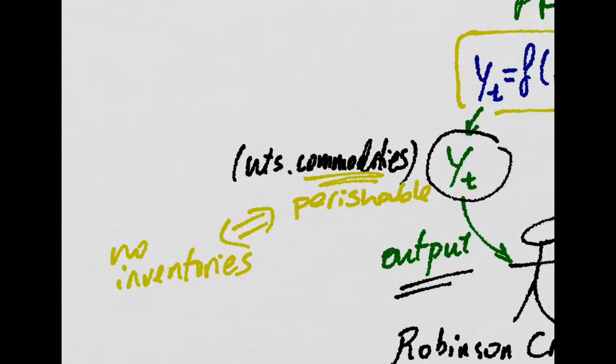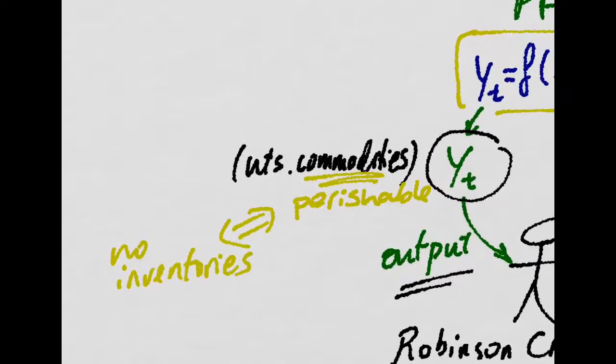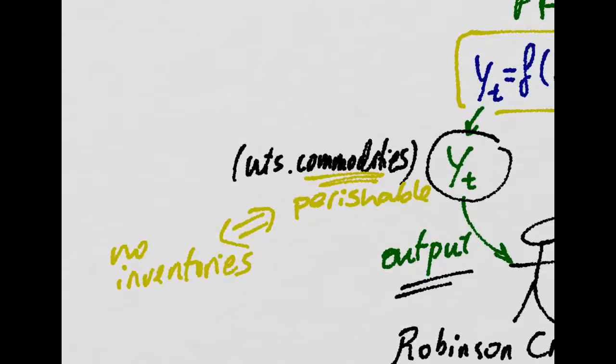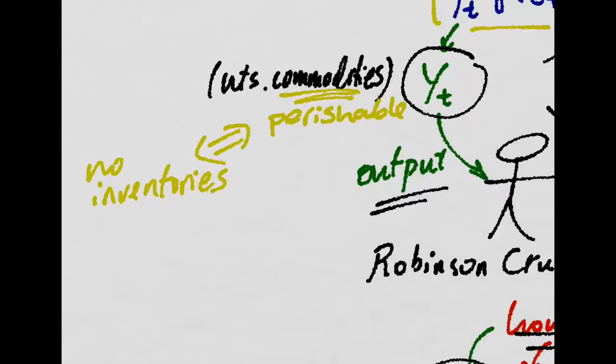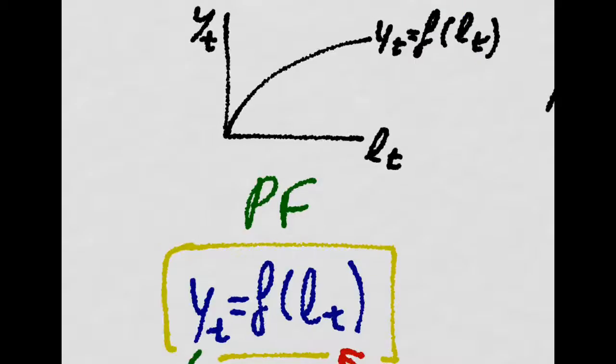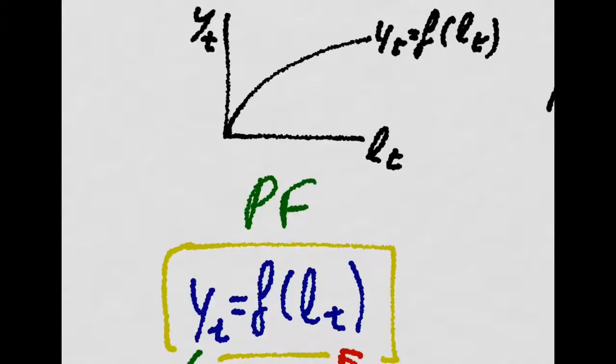This output is some commodity, for example, coconuts, which is perishable, thus there is no inventories. Since he cannot store what he produces, he has to consume it all. His production function looks something like this.